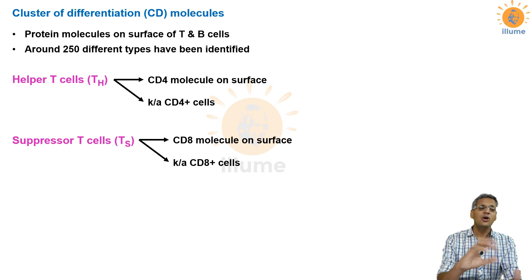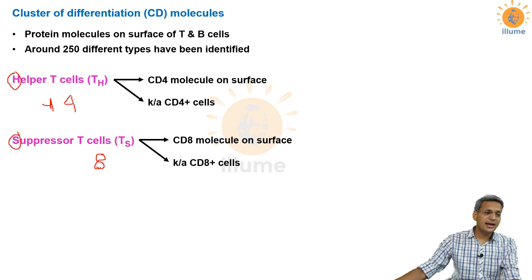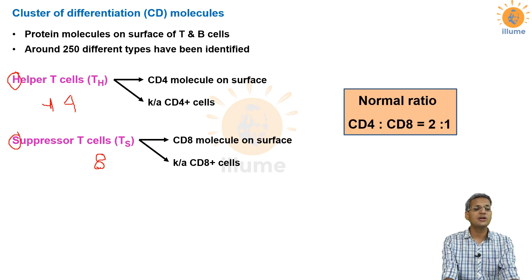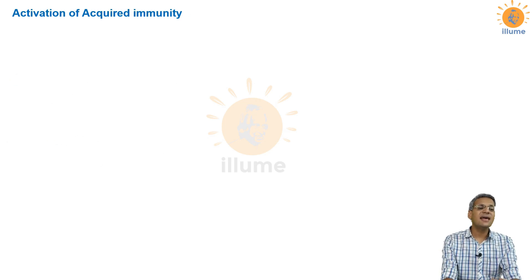A mnemonic to remember: write the letter 'H' for helper — half an H can be converted into the number 4, so helper T cells are CD4+. Write 'S' for suppressor — S resembles the number 8, so suppressor T cells are CD8+. The most important value to remember is the normal ratio of CD4 to CD8 in the body, which is 2:1.